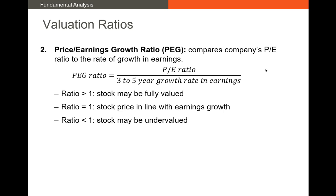Next is the PEG ratio — the price-to-earnings growth ratio. We take the P/E ratio, either forward or trailing, and divide by the last three-to-five-year growth rate in earnings. A very large PEG ratio indicates the firm is likely highly valued or even overvalued. A low ratio — say less than one — means rapid earnings growth with a fairly low P/E ratio, which might indicate undervaluation.